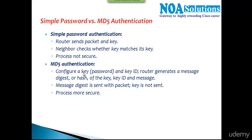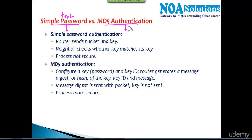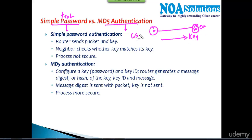Before getting into practical scenarios, let's understand the different types of authentication. We have two major kinds: simple text authentication, also called simple password authentication, and MD5 authentication. With simple text authentication, the router sends a hello packet along with the key. The neighbor checks the key against its own — for example, if the key is cisco123 and it matches on the other side, authentication is successful and they proceed to exchange routes and hello messages.